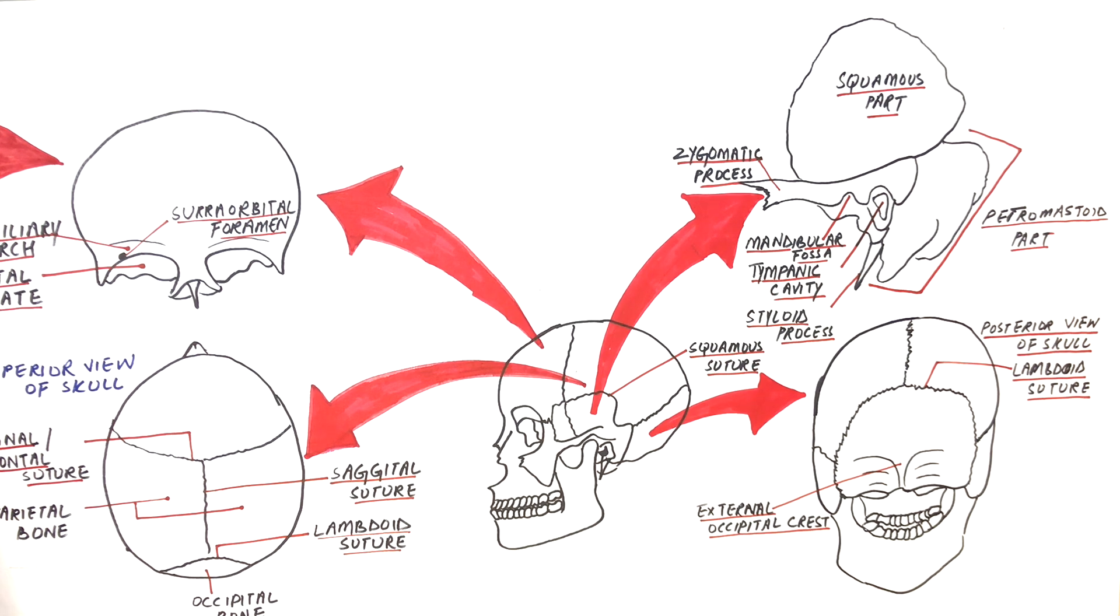In order to look at some more features of the occipital bone, we have to flip up the skull and have an inferior view of it. So let's draw a skull from an inferior view.